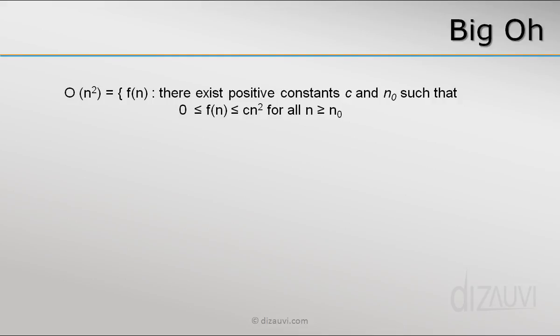Such that for some positive constants c and n0, c·n² will be greater than or equal to the function f(n) for all n greater than or equal to n0. That is, after some point n0, c·n² will always be greater than f(n).